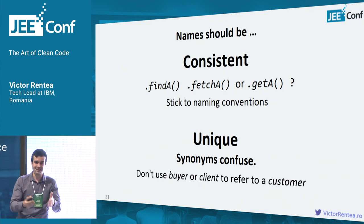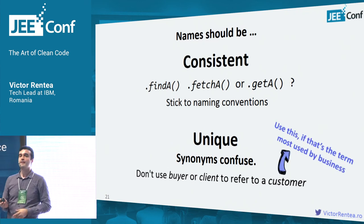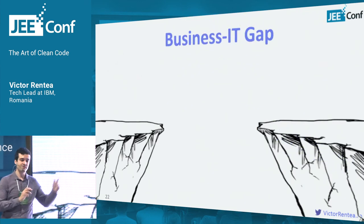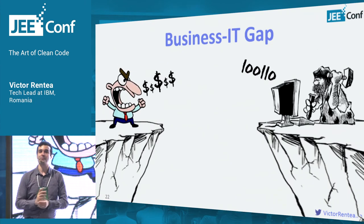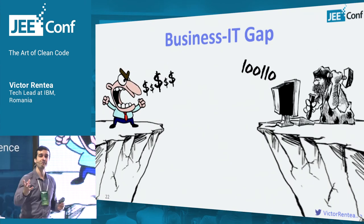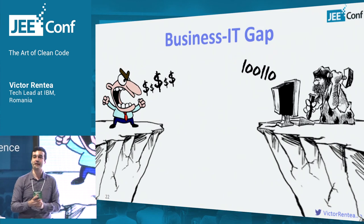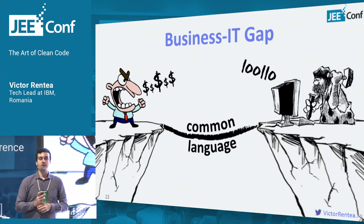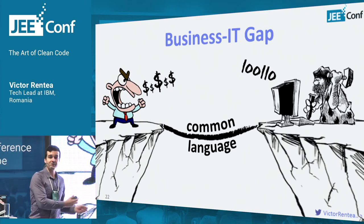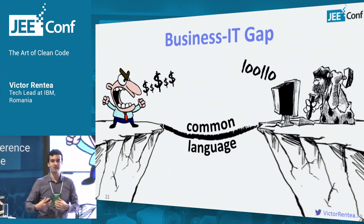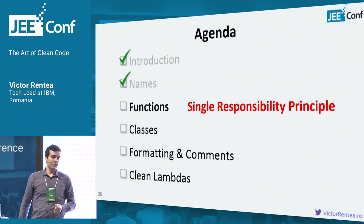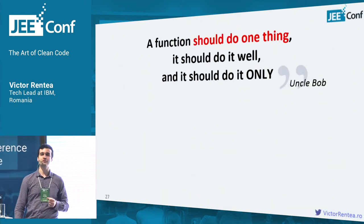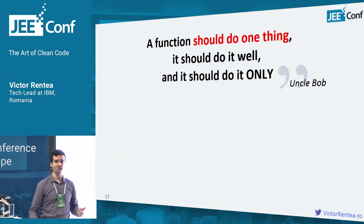Your code should be concise and leave no room for doubts. Do you know the gap between business and IT? Business is there with the money, and we are there with the binary file. We need a common language between us — learn from their world and explain to them the limitations of our IT systems. About the single responsibility principle: a function should do one thing, should do it well, should do it only, says Uncle Bob.